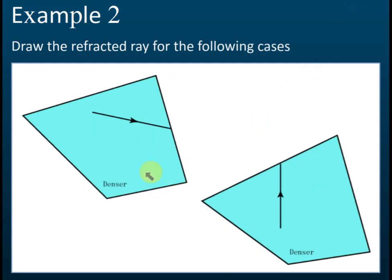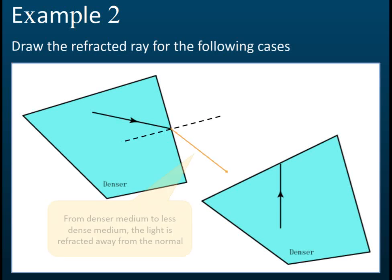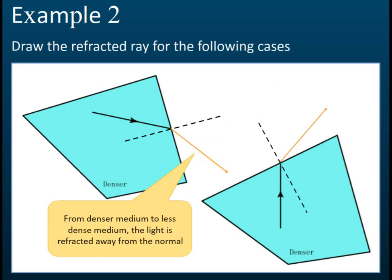For these cases, the light goes from denser to less dense. Denser to less dense means it will be refracted away from the normal. First, draw the normal, then draw the refracted ray away from the normal. Suppose the ray would move in a straight line, but it is refracted further away from the normal.